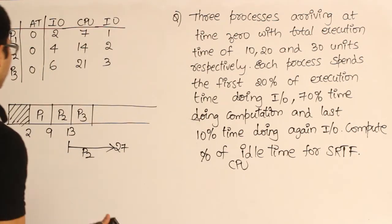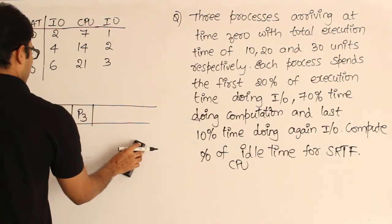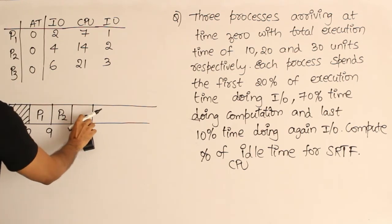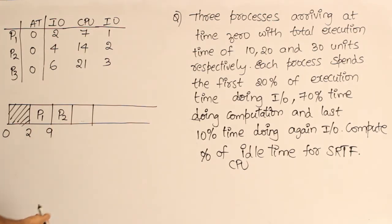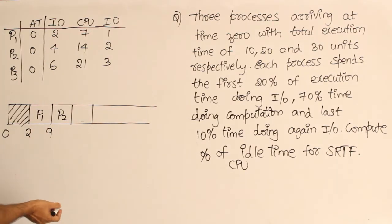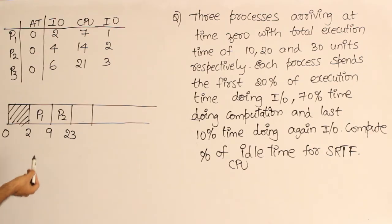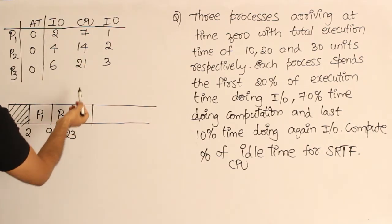If I schedule P3, P3 will run for 21 units of time. Wait, there is a small mistake here. In this case, P2 got scheduled at 9 by the time it finished its I/O. Therefore it could run for 14 units. 14 units is the CPU time, so from 9 till 14 it will run. Wait, 9 plus 14 is 23.